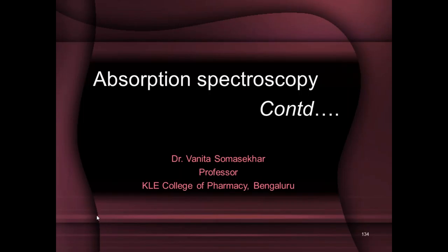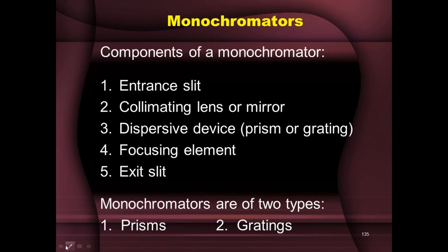We'll continue today with absorption spectroscopy from where we left off last class. Last class we were discussing wavelength selectors, and we saw there are two types: filters and monochromators. We also discussed filters, which are again of two types — interference filters and absorption filters. Interference filters can be used in both UV and visible regions, whereas absorption filters are restricted to use only in the visible region.